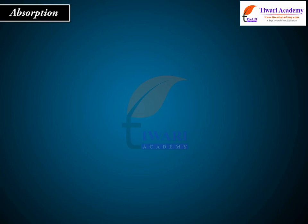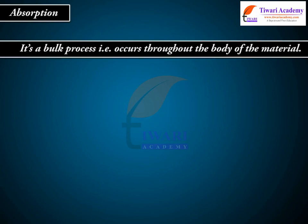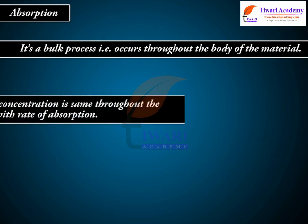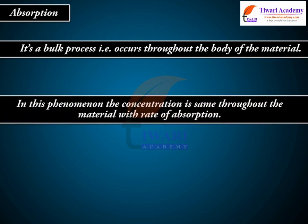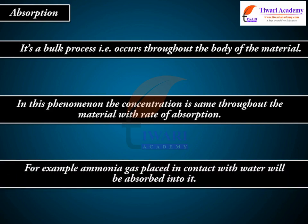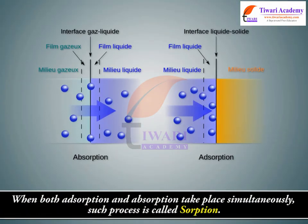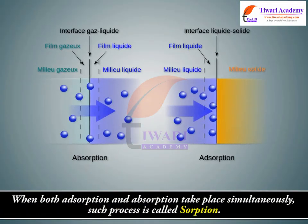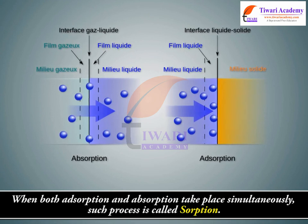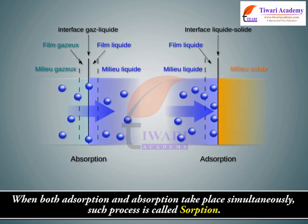Absorption is a bulk process, i.e., it occurs throughout the body of the material. In this phenomenon, the concentration is the same throughout the material. For example, ammonia gas placed in contact with water will be absorbed into it. When both adsorption and absorption take place simultaneously, such a process is called sorption.